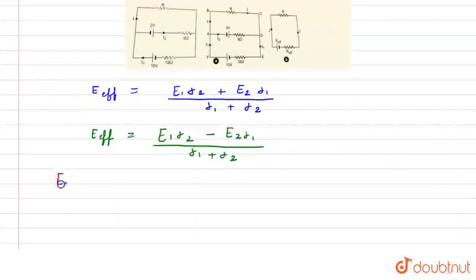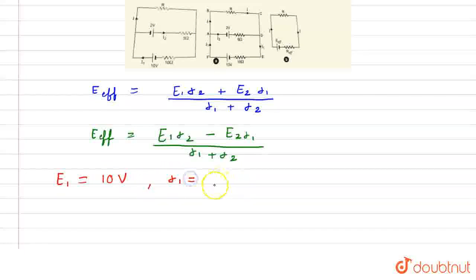Now, we have the values of E1, E2 and R1, R2 which is E1 equals 10V and R1 equals 10Ω, and E2 equals 2V and R2 equals 5Ω.